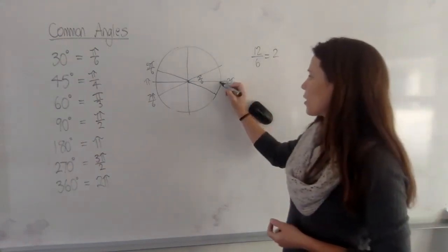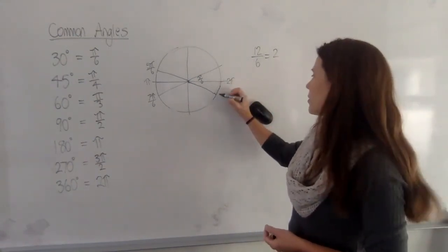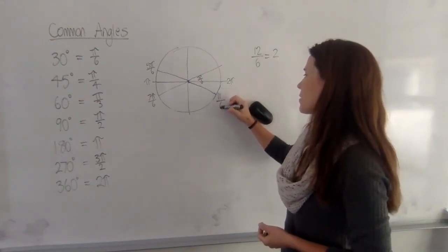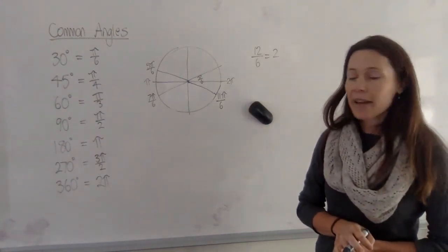So if you take off 1 sixth of a pi, you'll only have 11 sixths of pi. And we write it like that.